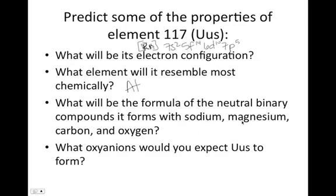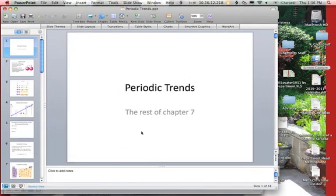What will be the formula of the neutral binary compounds it forms with sodium, magnesium, carbon, and oxygen? Well, seeing as Uus will form a negative one compound, sodium is going to be a plus one, magnesium is a plus two, carbon will be a plus four, and in this case, oxygen will be a plus two. So you can just do crisscross there to find your formulas. What oxyanions would you expect it to form? Remember, oxyanions are the polyatomic ions that contain oxygen. And so we would expect it to form the oxyanions that are similar to the chlorine oxyanions like hypochlorite, chlorite, chlorate, and perchlorate. And they're all negative one charges. So we would expect it to be the same, just replace the chlorine with the Uus. And I think that's all we got. So hopefully this kind of helped make that stuff a little bit more clear. And if not, you know where to find me.